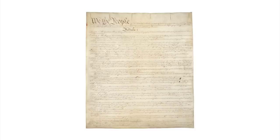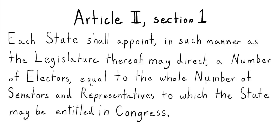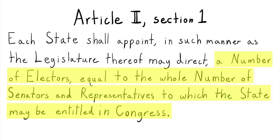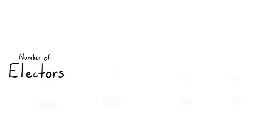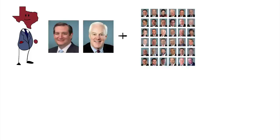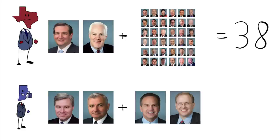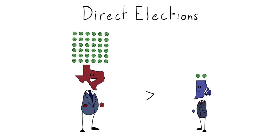The Constitution establishes the electoral college, stating that each state shall appoint, in such manner as the legislature thereof may direct, a number of electors equal to the whole number of senators and representatives to which the state may be entitled in Congress. The highlighted part is what you learned about the electoral college in school. Each state gets a predetermined number of votes for president — the number of senators, which is two, plus the number of representatives, determined by population. Big ol' Texas with its two senators and 36 representatives gets 38 electors, while little Rhode Island, which also has two senators but only two representatives, gets four electors — still more representation than it would have with direct elections.